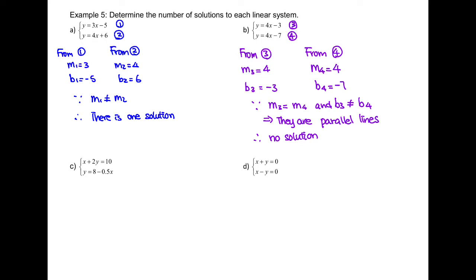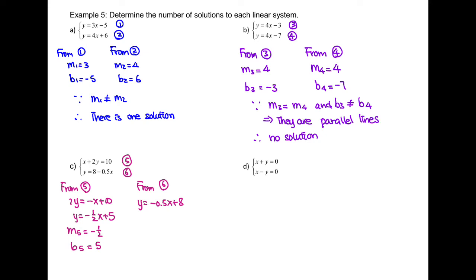Part C. Label equation 5 and equation 6. From equation 5, isolate for y to get slope of negative one half and y-intercept of 5. From equation 6, rearrange and convert negative 0.5 to a fraction: negative 1 over 2. So the slope is negative 1 over 2 and the y-intercept is 8. Since those two lines have the same slope and different y-intercepts, therefore they are parallel lines — no solution.